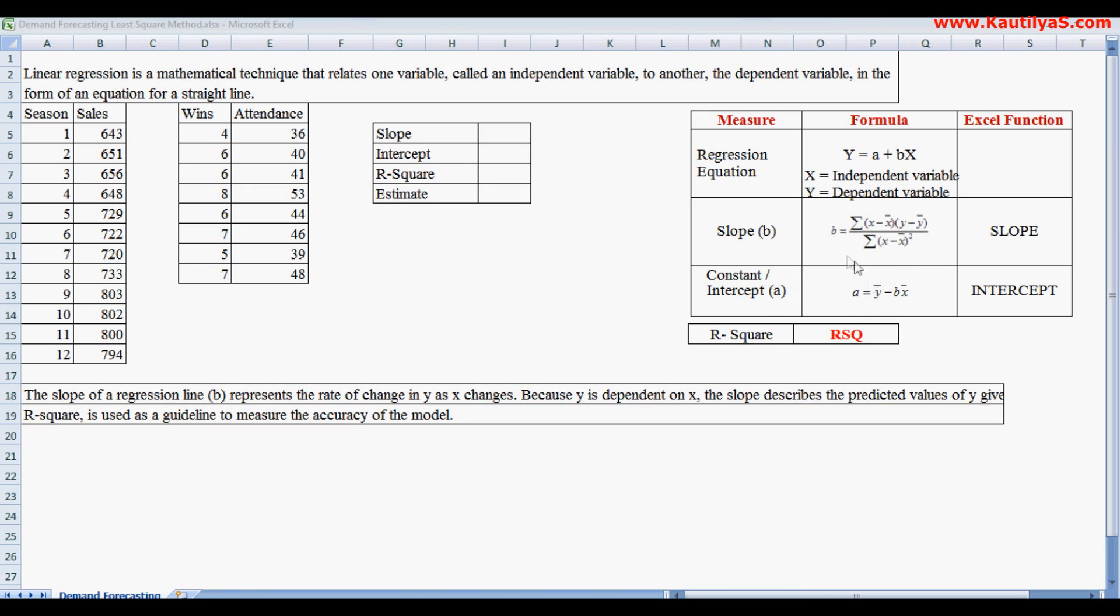Instead of doing lengthy calculations in Excel, we use simple built-in functions: one is SLOPE, second is INTERCEPT, and third is RSQ to calculate the R-square value.